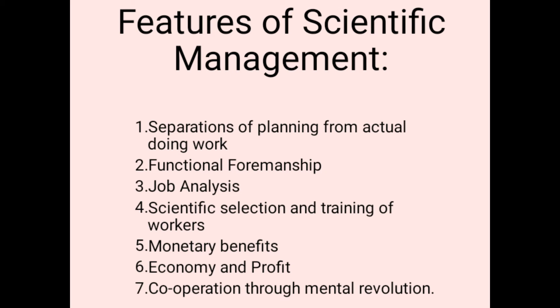The second feature is Functional Foremanship. Taylor suggested that different work should be divided among different people according to their specialization. Those who are good at a particular task should be preferred for it. Different work assigned to different people — for example, speed boss, repair boss, gang boss, inspector. In the planning room there is a route clerk, instruction card clerk, and time and cost clerk.